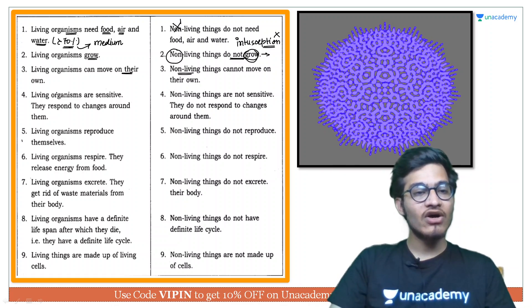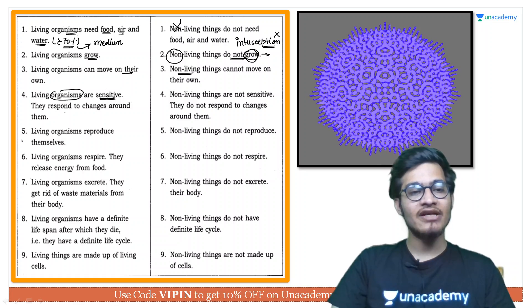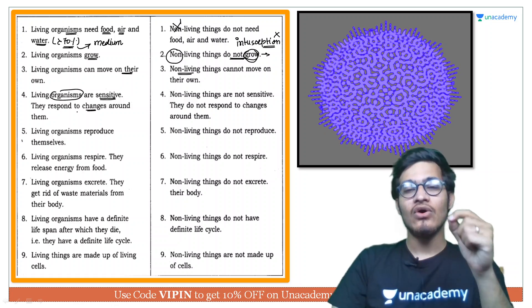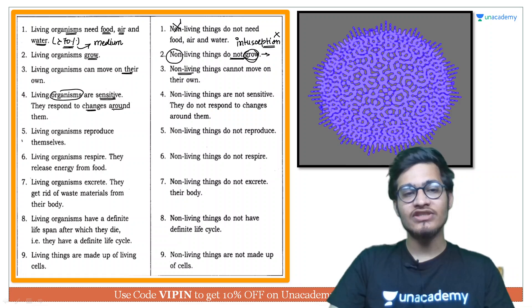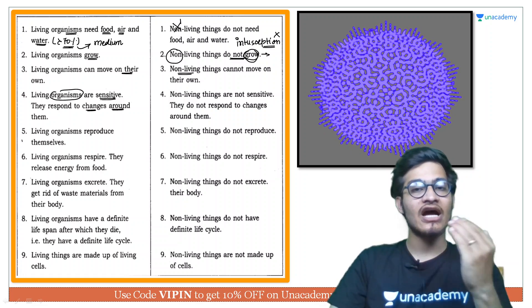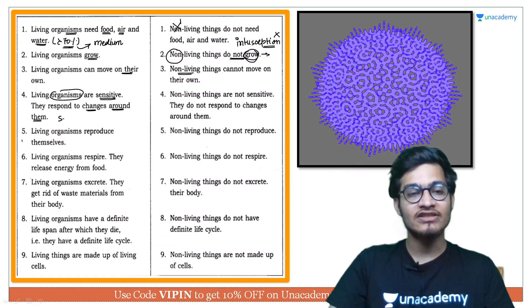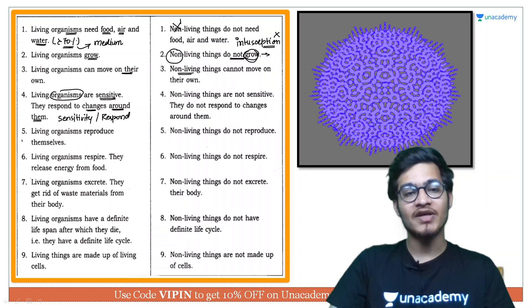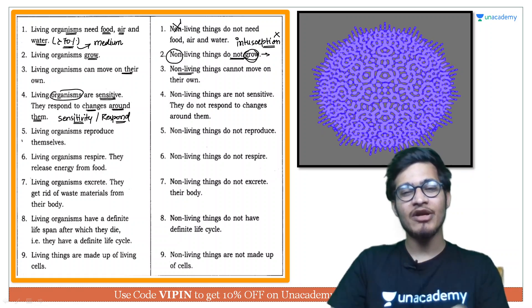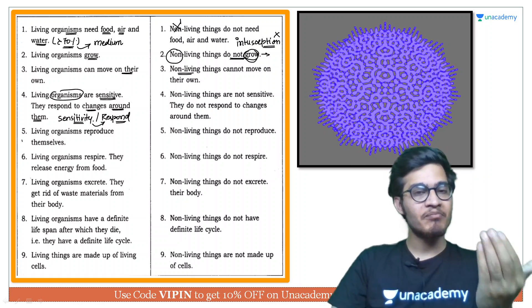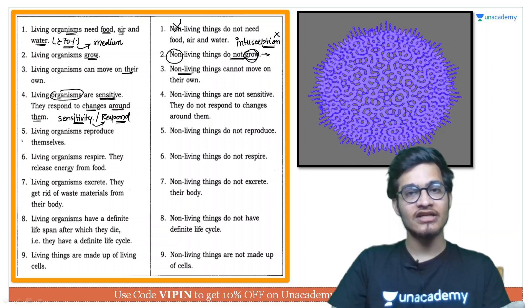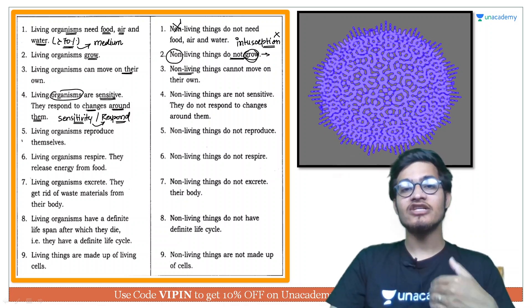Living organisms sensitive hote hain, yeh apne environment mein hone wale changes ko you know pata lagate hain yani ki they need to sense the changes which are occurring around themselves aur wo uske according respond bhi karti hain. It means that they have the sensitivity plus inke paas hota hai the tendency to respond. So yeh dono ki dono cheezein hain aapki consciousness kehlati hai joki aapke environment mein agar koi bhi change hai toh usse detect karti hai aur uske against ek response bhi generate karti hai jaise aapke paas agar koi saap aa raha hai dheere dheere chalke toh aap wahan se bhaagna start kar doge that is the response which is generated in terms of stimulus. Lekin non-living things mein aisi koi bhi cheez nahi hoti.